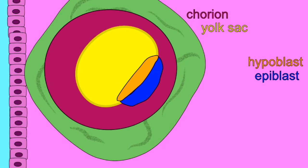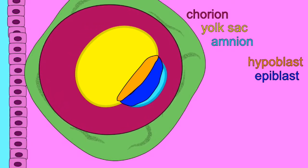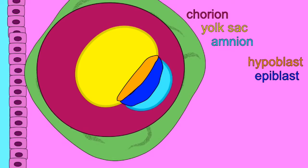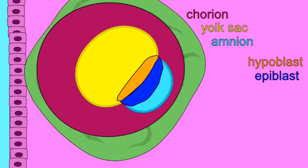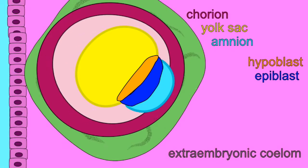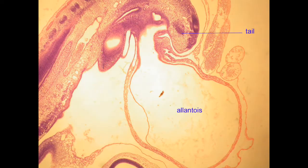The chorion is what performs gas exchange and forms the fetal part of the placenta. In an amniotic egg, this is the membrane just within the egg shell that performs gas exchange. There is also a yolk sac, and blood vessels from the yolk sac will be mentioned in choriovitelline placentas.